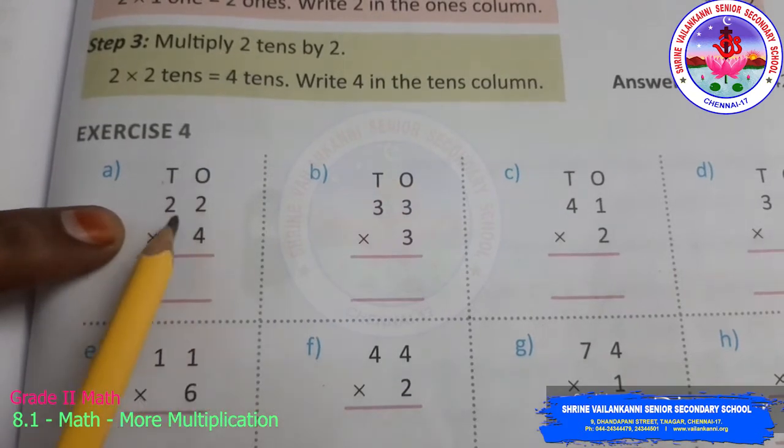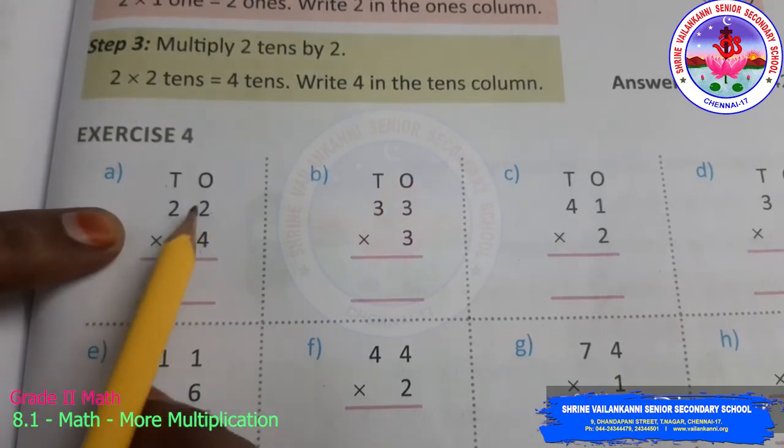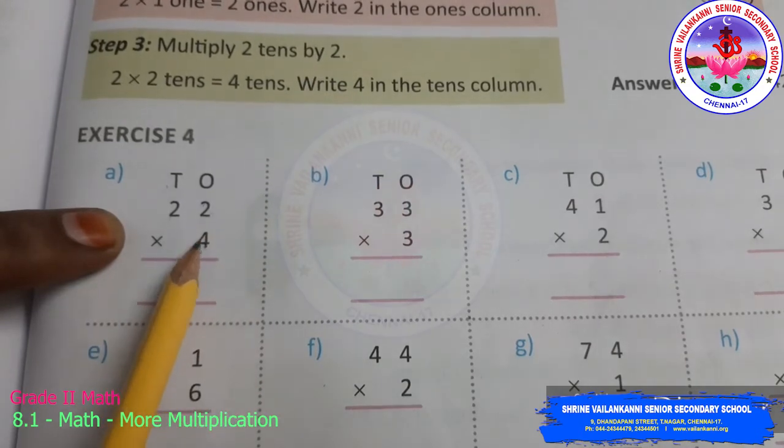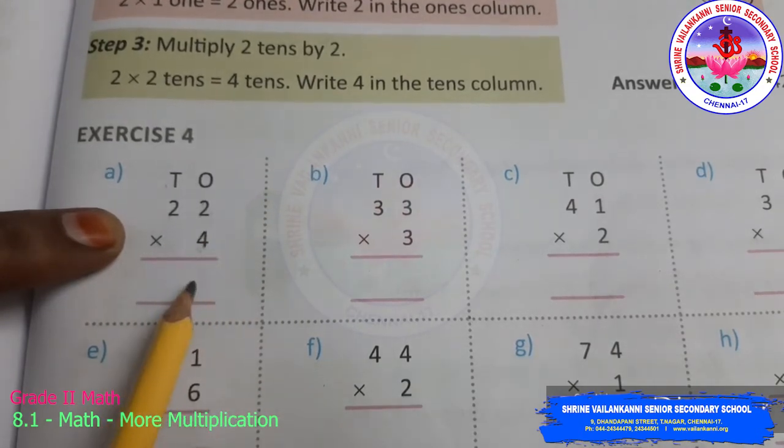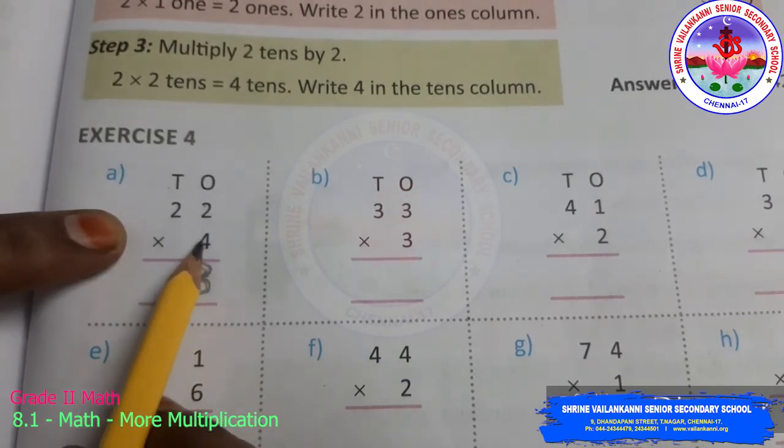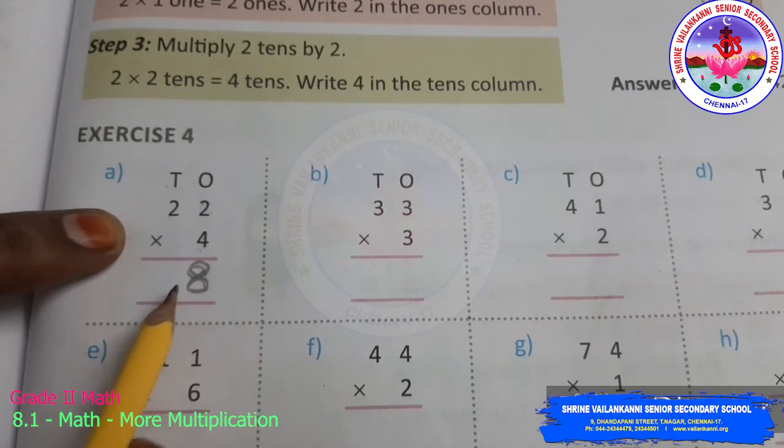Write tens and ones. You are going to multiply 22 into four. First you have to multiply the ones. This number into this number. Four into two. Eight. If you don't know the four tables, switch to the two tables. Two fours are eight. Both will get the same answer.